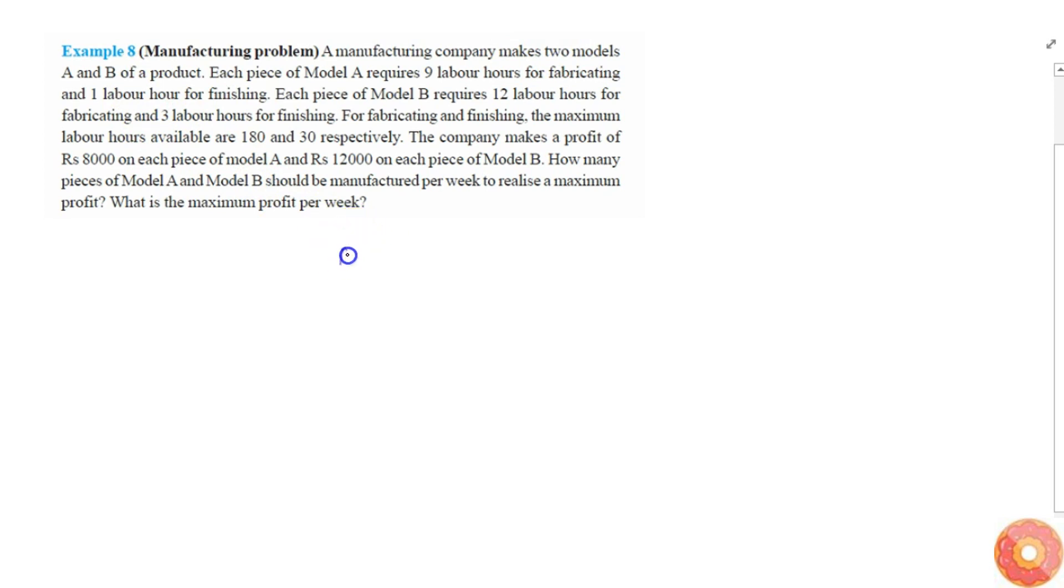So, there is A and B of a product. Each piece of model A requires 9 labor hours. Hours required is 9 for 1. And this required 12 hours of labor. And 3 hours labor for fabricating. And this needs 9 hours for fabricating and 1 hours for finishing.